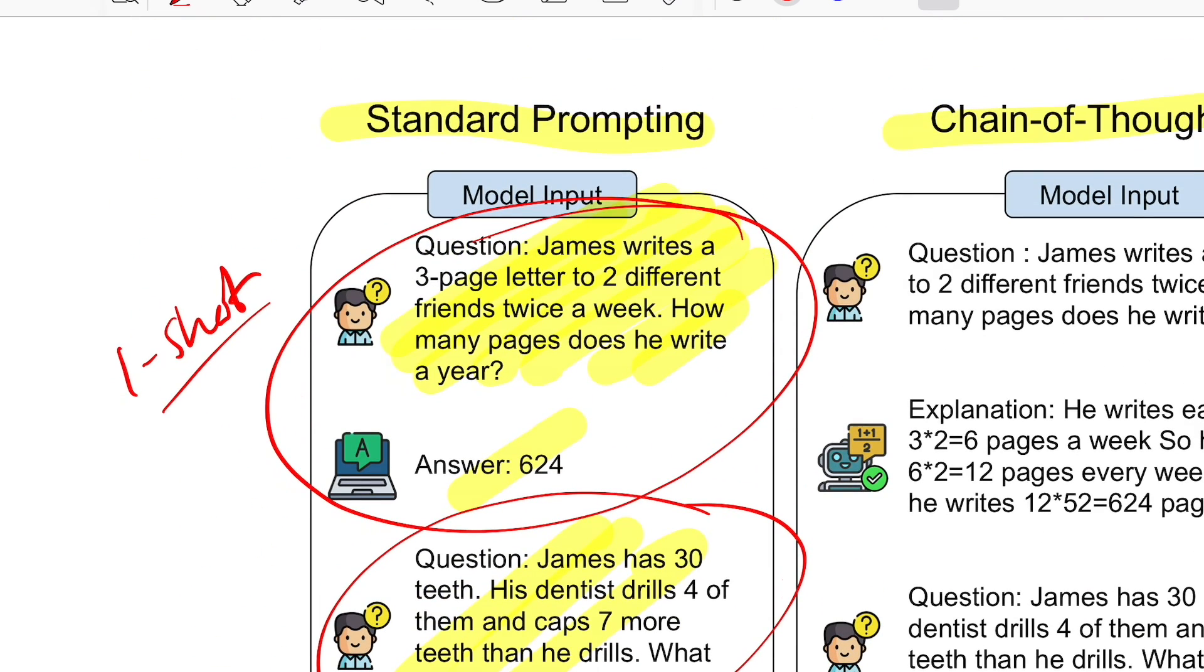This method worked pretty well for tasks that were quite deterministic, but for cases where you have reasoning involved, such as solving a mathematical expression or questions like these, you need to understand what's happening and accordingly add those values to get to the final answer. There is a chain of thought that you have to put in to get to the final answer by deriving values based on the intermediate calculations that you do.